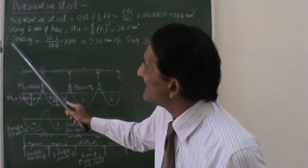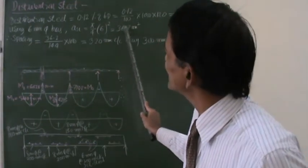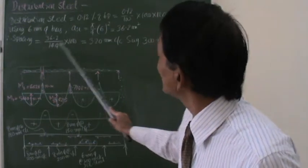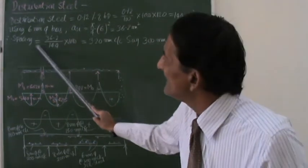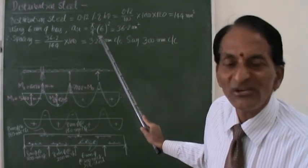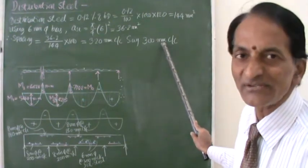So now, I have easily calculated the spacing required. This is small ASP divided by capital ASP into 1000. It will give me the spacing. So the spacing is now 320 mm center to center or say 300 mm center to center.